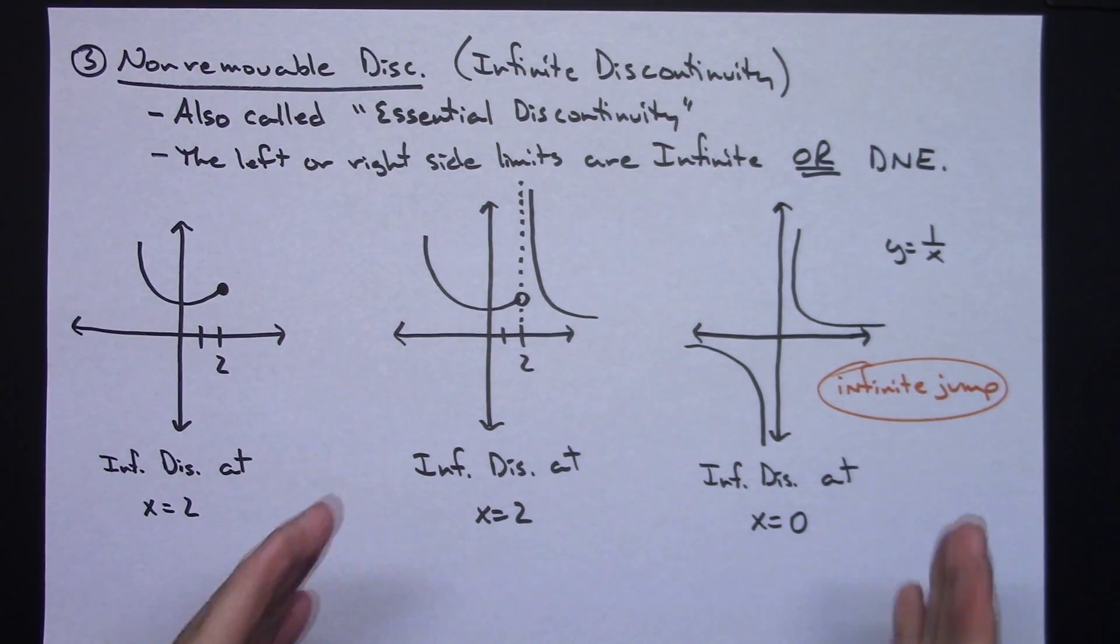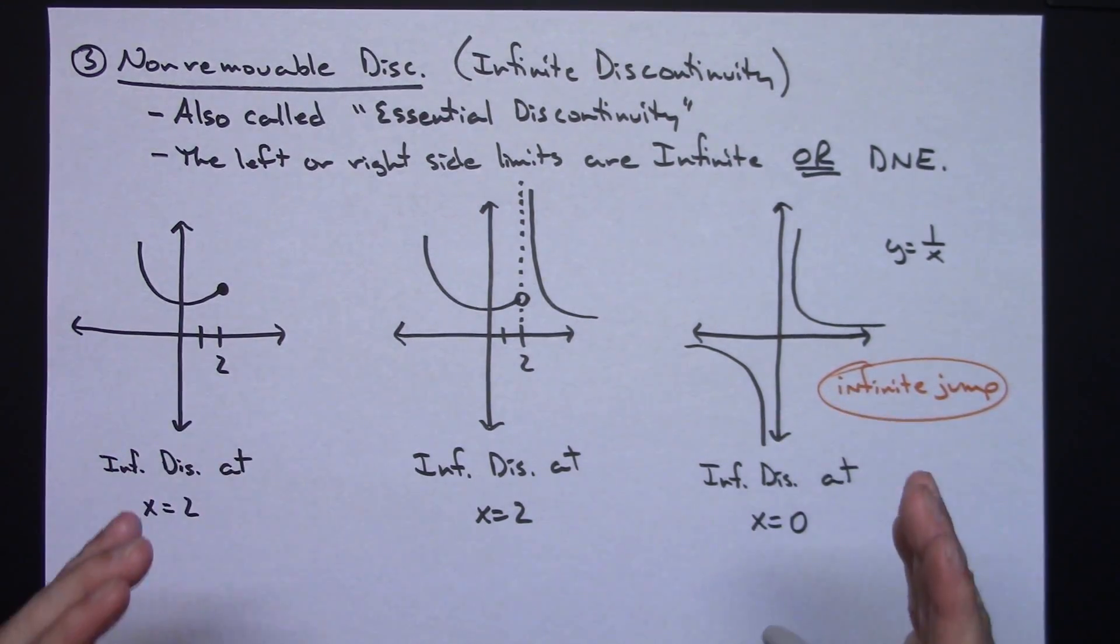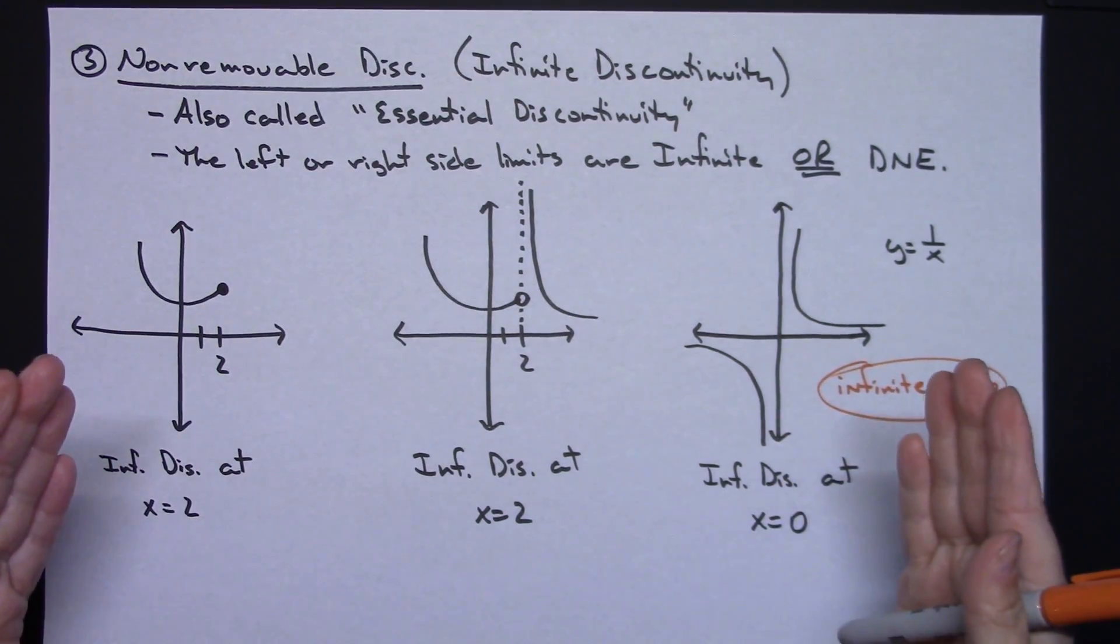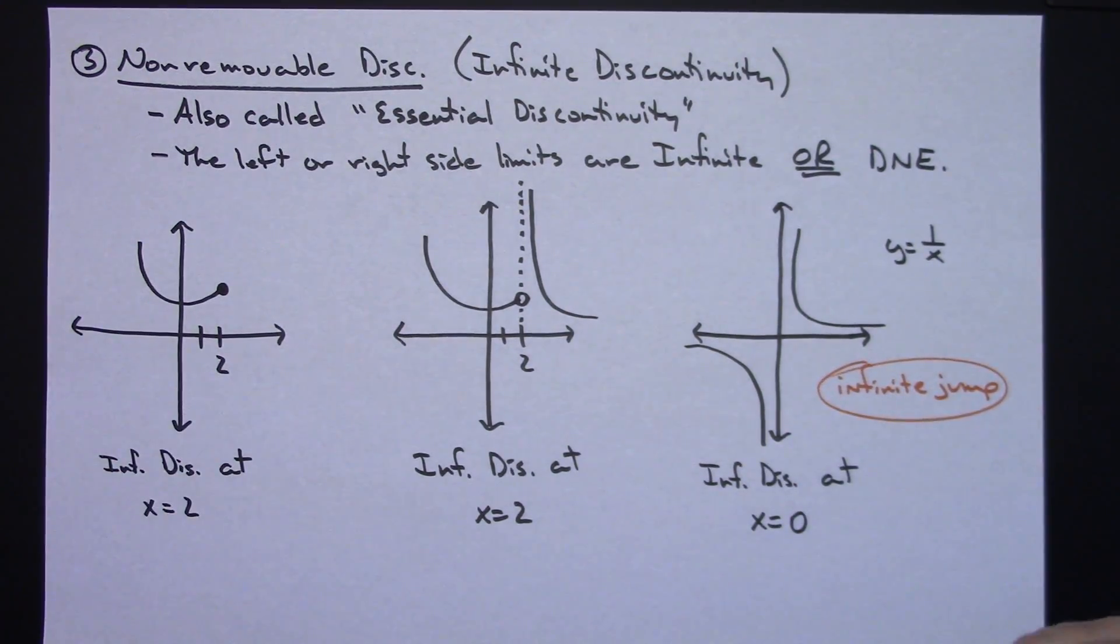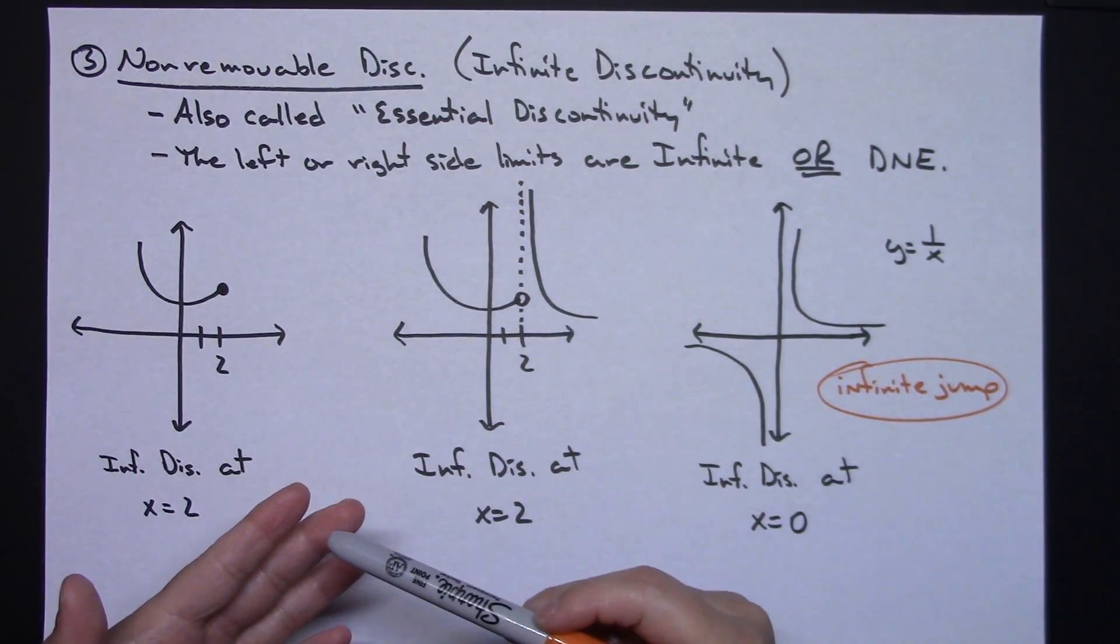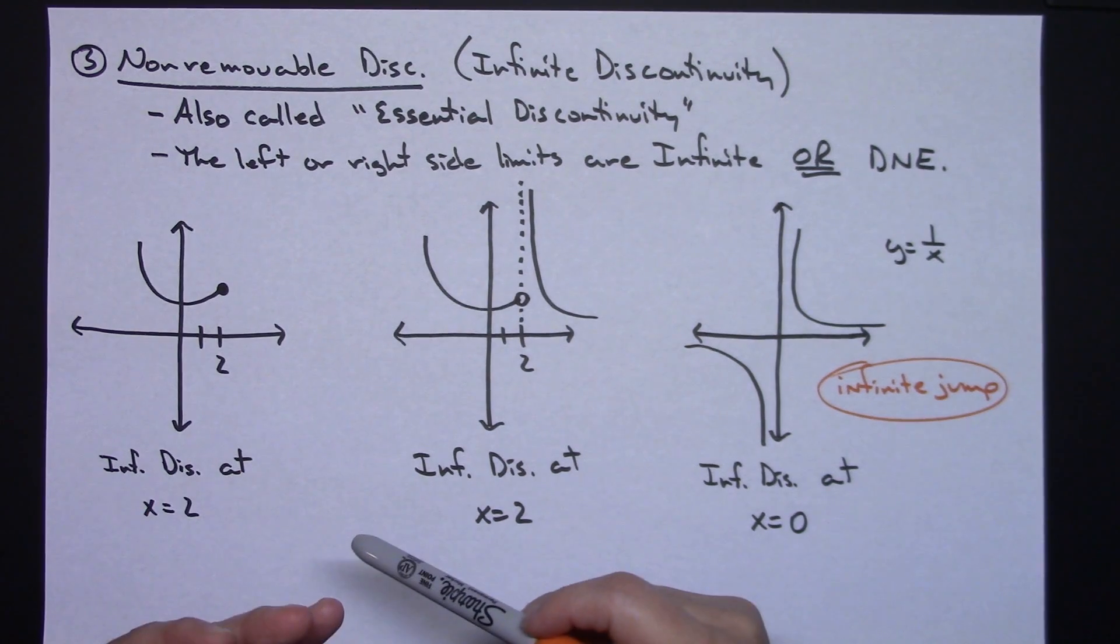So just kind of a breakdown of your different types of discontinuities. You've got two types, either removable or non-removable, but then if you want to be more specific, you want to describe what's going on in the graph more, then you can use terms like hole, jump, infinite discontinuity.